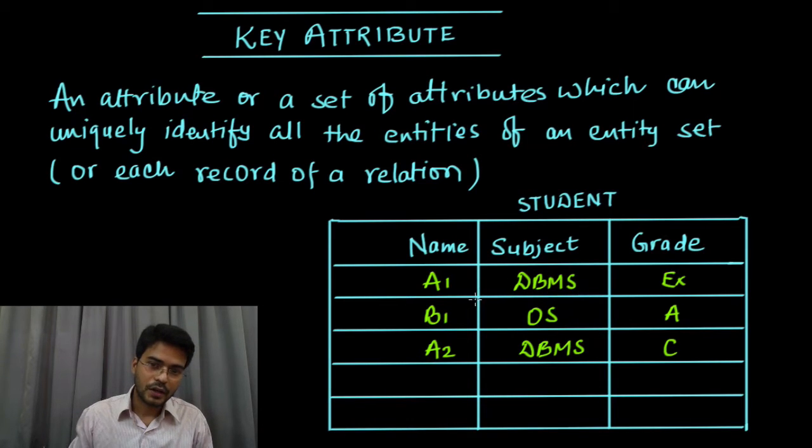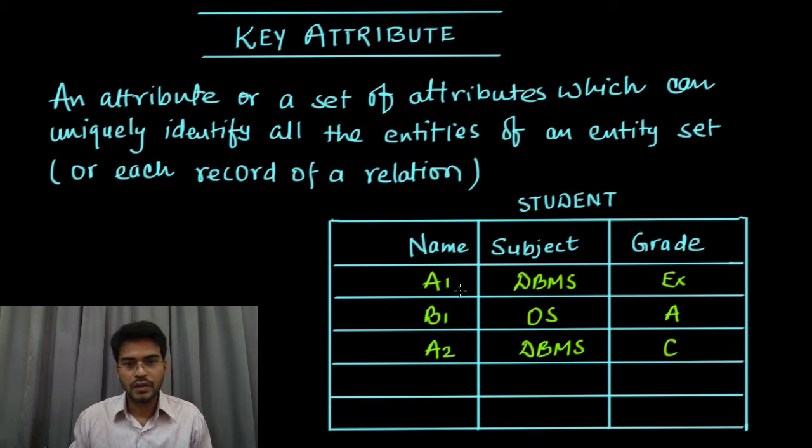What is the name of student which has taken subject DBMS? Then there is a conflict. Why? Because there are two students who have taken subject DBMS, and the expected result should be a single attribute. I am not able to uniquely identify a single record.